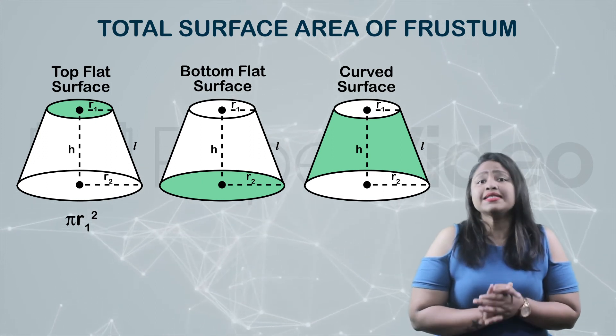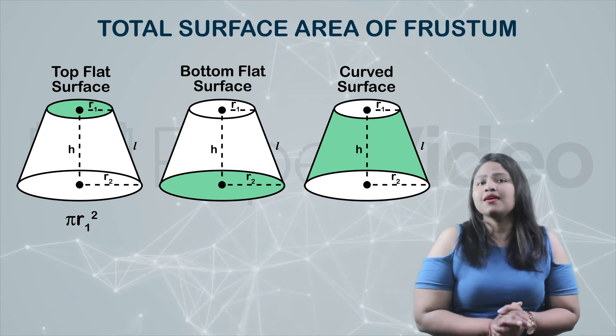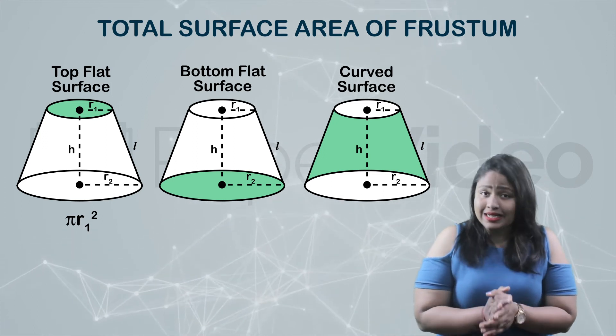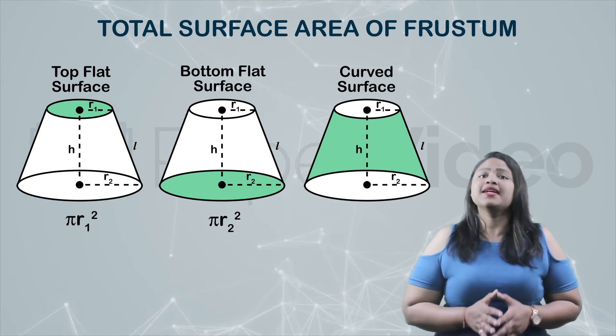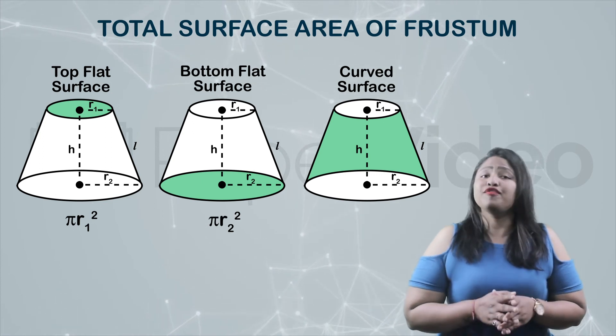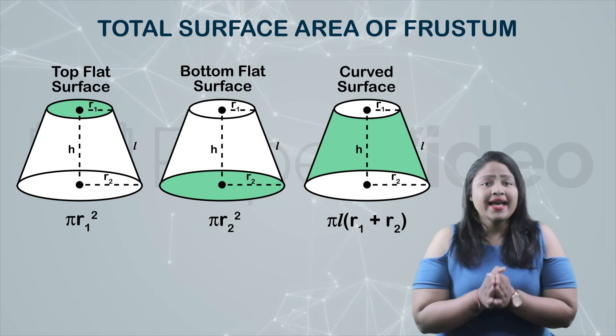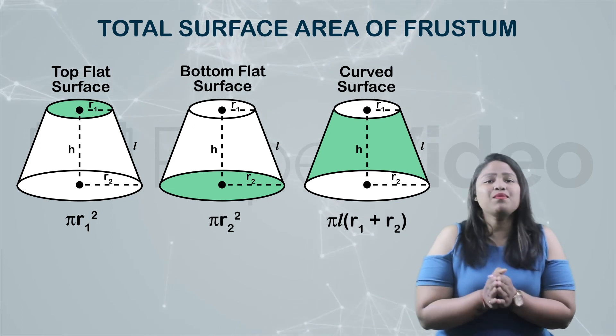Similarly, the area of the bottom flat surface is equal to the area of the circle radius r2, that is pi r2 squared. And we already have discussed that the area of the curved surface of a frustum is pi l multiplied by r1 plus r2.